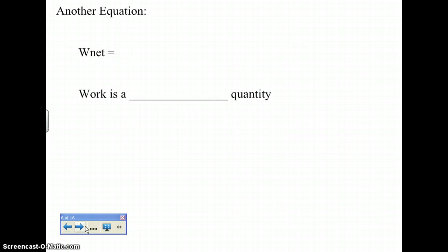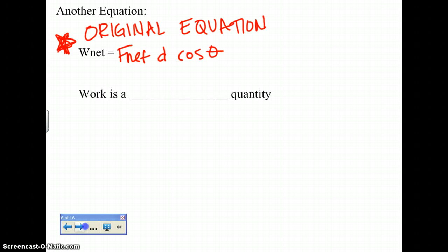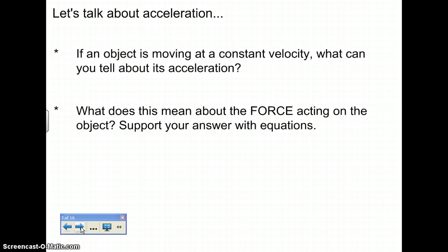Next, what we have is this is the equation. This one would be considered your original when you're talking about work. W net equals F net D cosine theta. That's the original equation. So what we're going to look at, though, is work as a scalar quantity, which kind of sort of changes here because we're going to be talking about positive and negative here in a second. And all we're talking about here is if you're going to use zero degrees or 180 degrees.